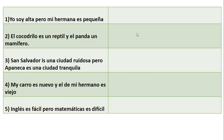My direct students, welcome to your English class. I have five questions. Look: 'Yo soy alta pero mi hermana es pequeña.' 'El cocodrilo es un reptil y el panda es un mamífero.' 'San Salvador es una ciudad ruidosa pero Apaneca es una ciudad tranquila.' 'Mi carro es nuevo y el de mi hermano es viejo.' 'Inglés es fácil pero matemáticas es difícil.' In each sentence I have an adjective: alta, pequeña, ruidosa, tranquila, nuevo, viejo, fácil, difícil.